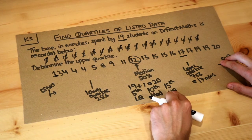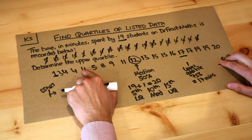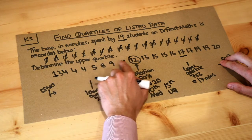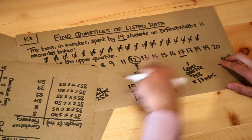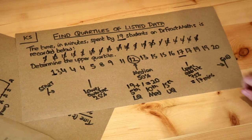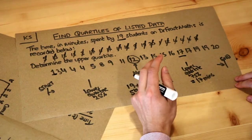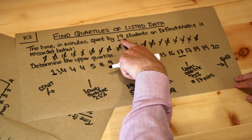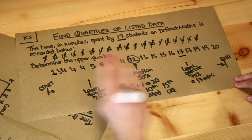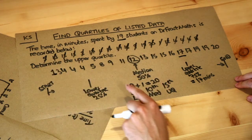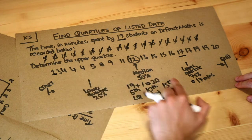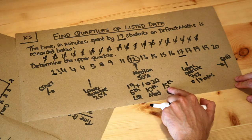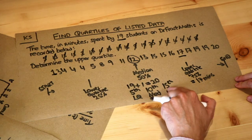So we immediately know we want the 15th item for the upper quartile. Counting along: 1, 2, 3, 4, 5, 6, 7, 8, 9, 10, 11, 12, 13, 14, 15 — that gives us the correct item. I find this method really useful. We just add 1 to the number of items, and if we want the upper quartile we find three quarters of 20, which is 15, and find the 15th item.